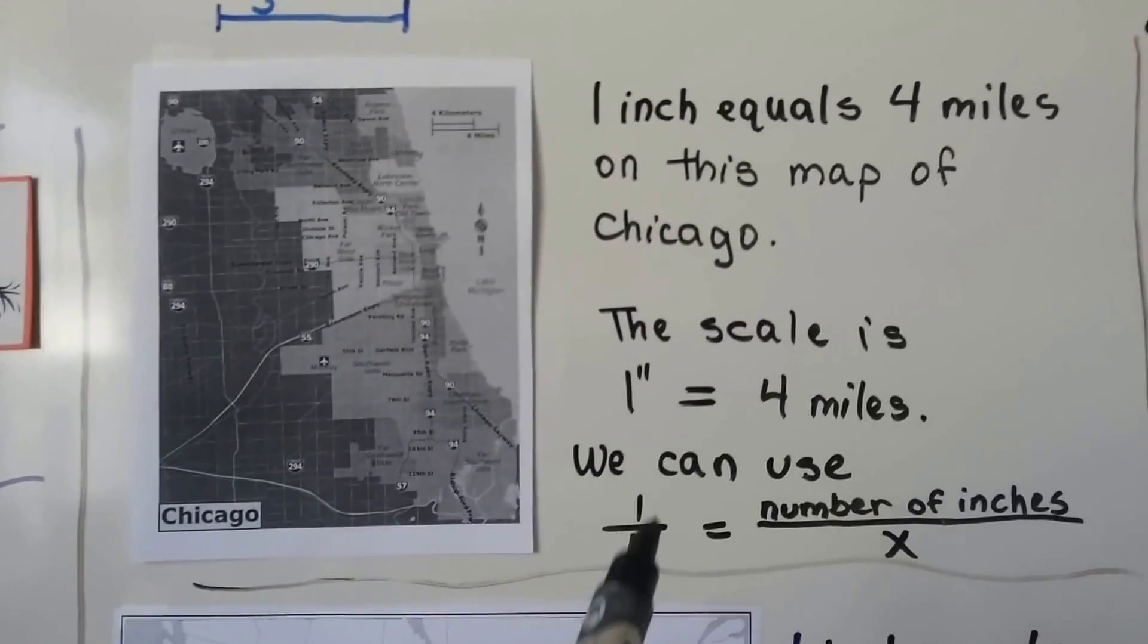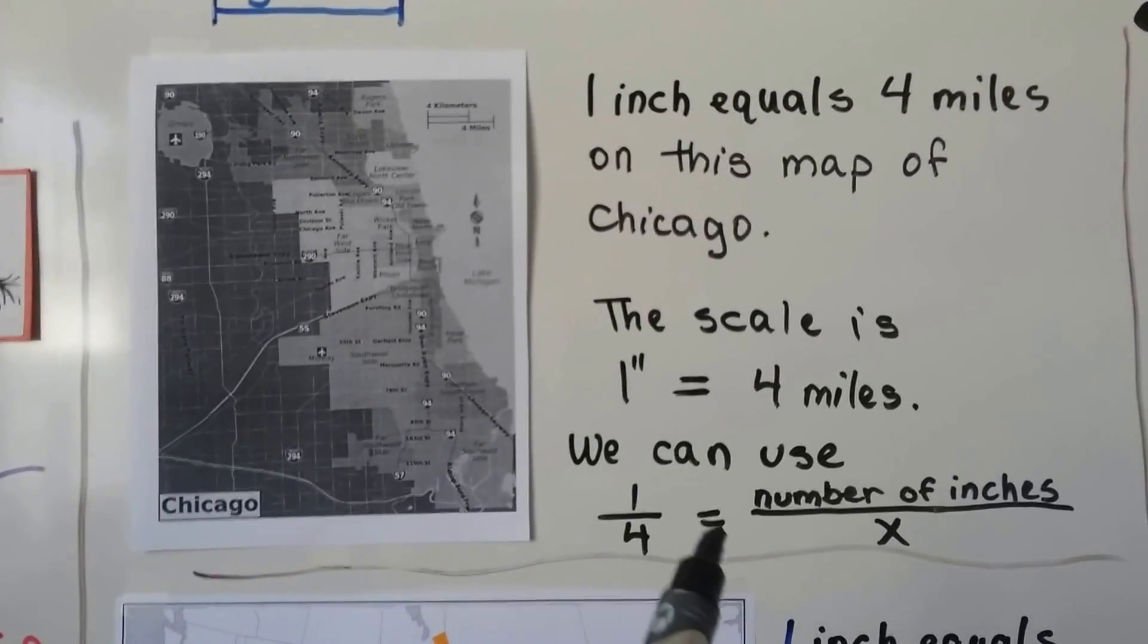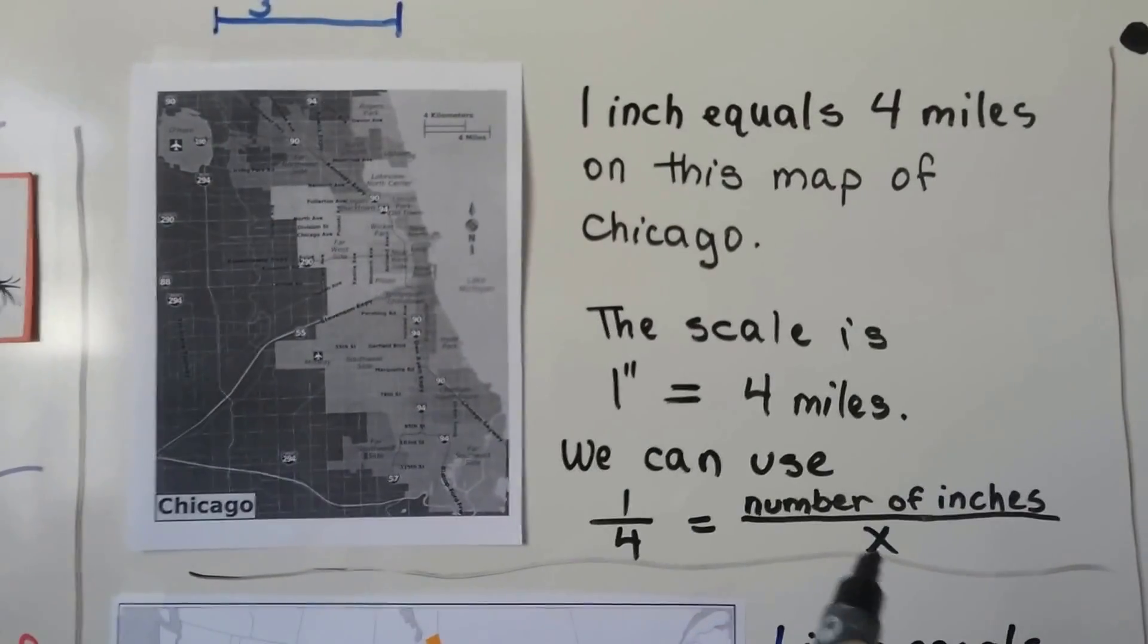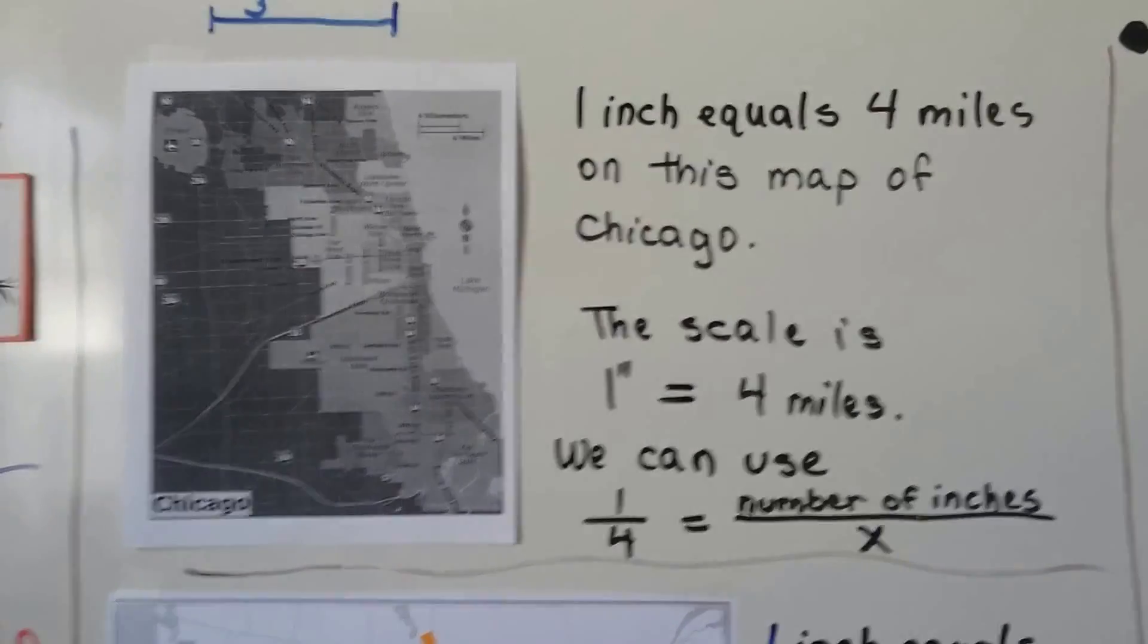This one inch equals four miles becomes our fraction. We get one-fourth equals the number of inches we measured, the three, over how many it actually is, x.